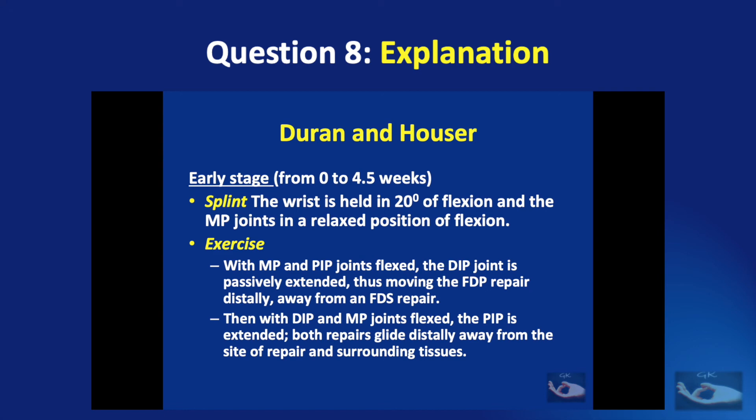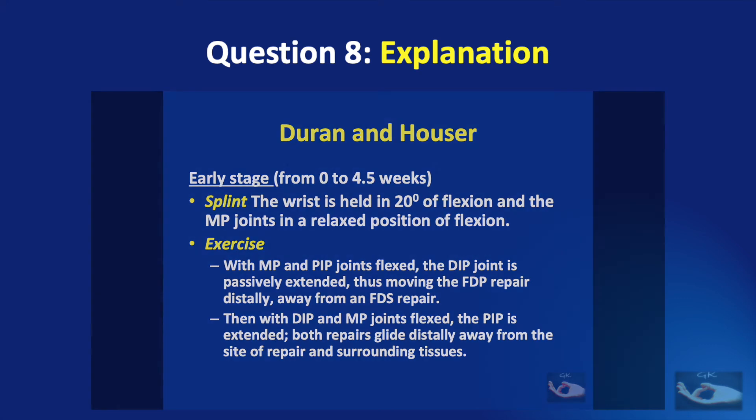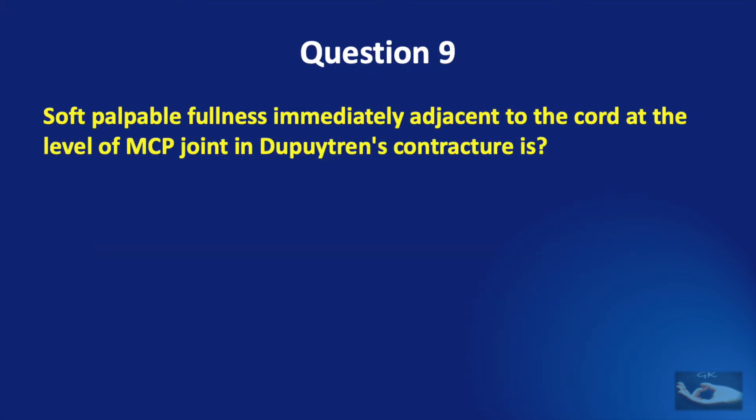Within the splint, with the metacarpophalangeal and PIP joints flexed, the DIP joint is passively extended, thus moving the FDP repair distally away from the FDS repair. And with the DIP and MCP joints flexed, the PIP joint is extended. By this method, both repairs move distally away from the site of repair and the surrounding tissues.